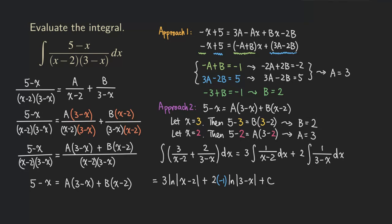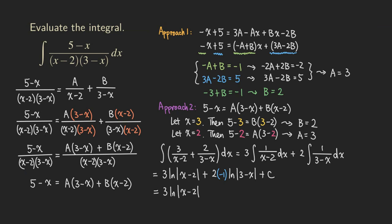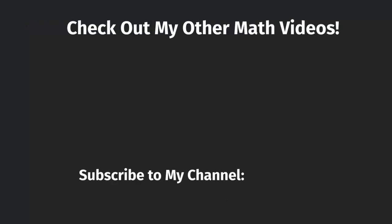Cleaning up the final answer: 3·ln|x - 2| - 2·ln|3 - x| + C. If you want, you can move the 3 and 2 as exponents and combine the logarithms into a single log function, but that is just basic algebra. That's how you do this kind of problem. If you like this video, please give me a like, subscribe to my channel, and share. Leave me a comment if you have questions or a topic you'd like me to cover. Thank you for watching.